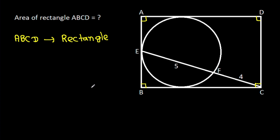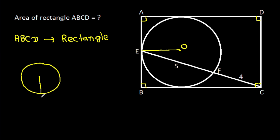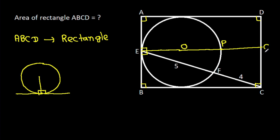Now, suppose the center of the circle is O. Then EO will be the radius. We know that in any circle, the radius and tangent are perpendicular to each other. So OE will be perpendicular to AB. If we extend EO, suppose this point is P and this point is Q.